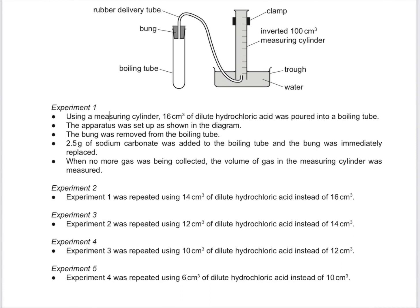Using a measuring cylinder, 16 cm³ of dilute hydrochloric acid was poured into a boiling tube. The apparatus was set up as shown in the diagram. The bung was removed from the boiling tube. 2.5 grams of sodium carbonate was added to the boiling tube, and the bung was immediately replaced.